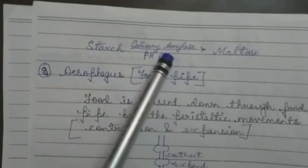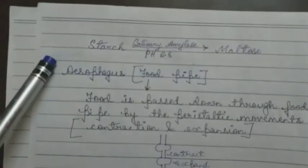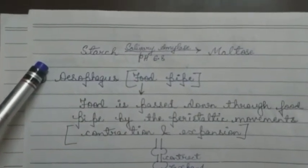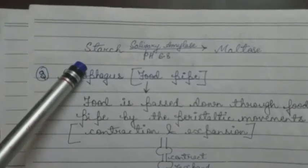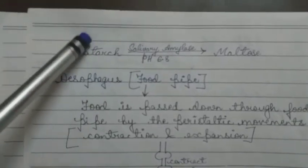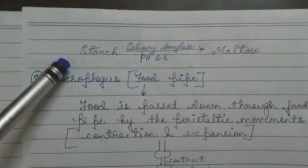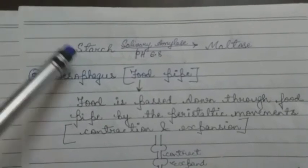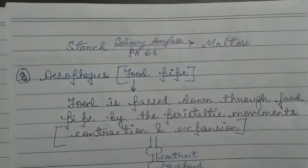Starch, in the presence of salivary amylase, gets converted into maltose under pH 6.8. Digestion starts in our mouth, and the first substance to get digested is starch — starch digestion begins in the mouth.